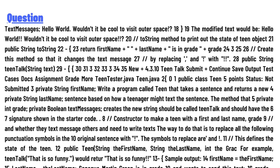The toString method prints the output and the state of the Teen object. 'Hello world would not it be cool to visit outer space.' Public string toString returns: first name, last name, is in grade, grade. Create this method so that it changes the text message by replacing 'and' and 'with' — public string teenTalk, string text.